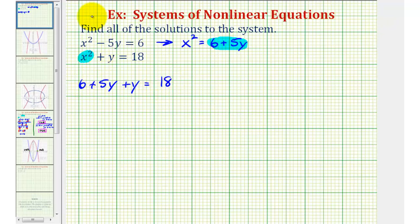Combining like terms on the left side of the equation, five y plus y or five y plus one y would be six y. So we have six plus six y equals 18.